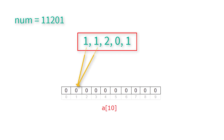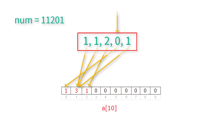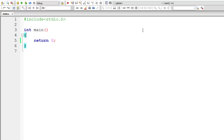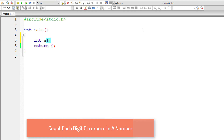For each occurrence of these individual digits, we increment the value present at that index by 1. In this case a[0] is 1 because 0 occurs only once, a[1] is 3 because 1 occurs 3 times in this number, and a[2] is 1 because 2 occurs only once in this number. After this we just display the non-zero numbers onto the console window.